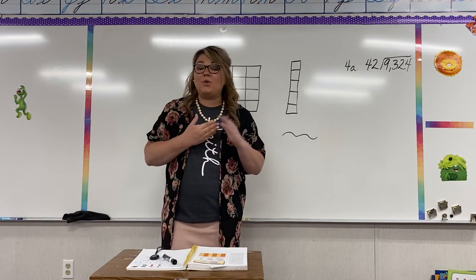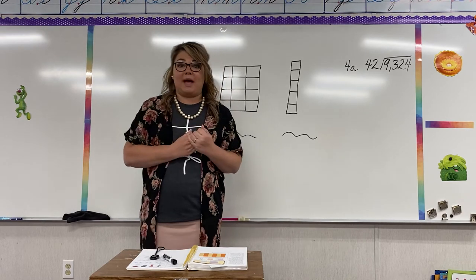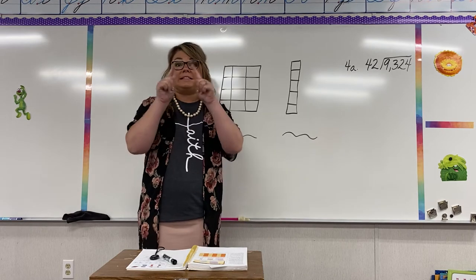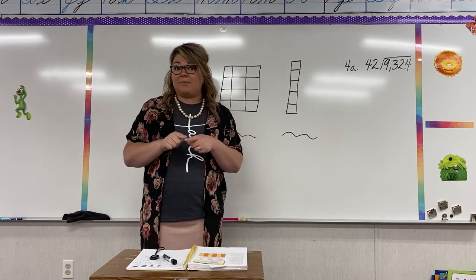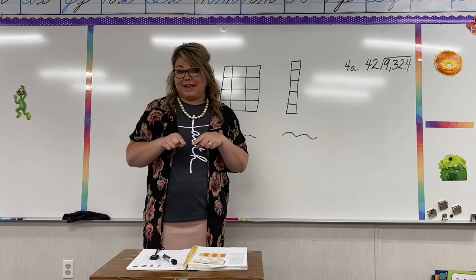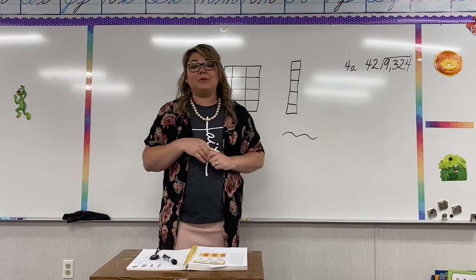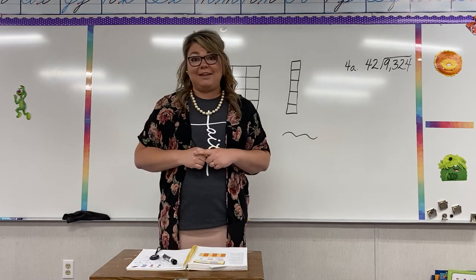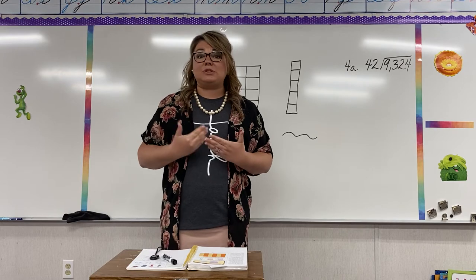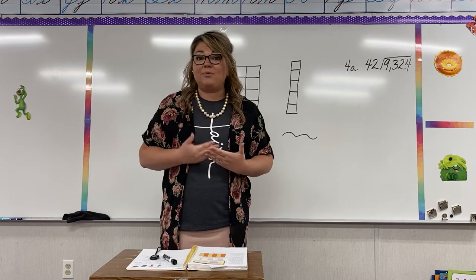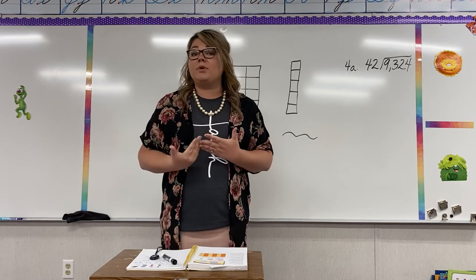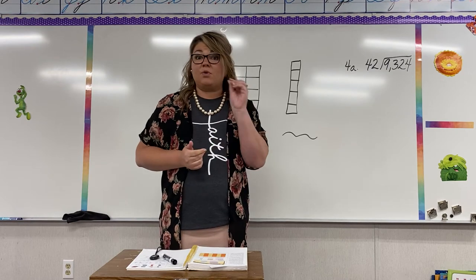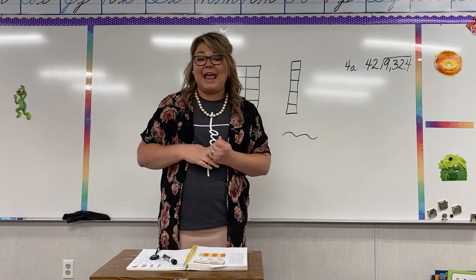Last week we learned about perimeter, and we know the perimeter is the distance around an object — the outside of an object. We learned some formulas for that. The perimeter of a rectangle is P equals 2 times L plus 2 times W. The perimeter of a square was 4 times S, which is the side.